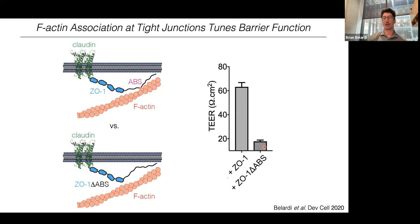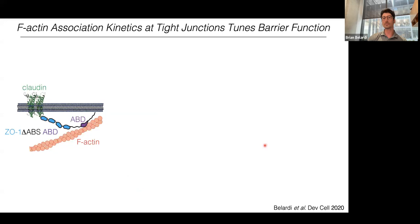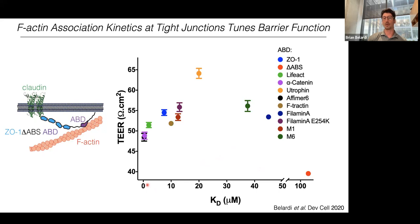To test this, we engineered a version of cells that had ZO1 but lacked that 28 amino acid sequence, and we compared their barrier function using transepithelial electrical resistance. We saw a drastic difference: ZO1 containing the actin-binding sequence had high barrier function (low permeability), while cells with ZO1 lacking those 20 amino acids showed a drastic reduction in TEER. We then replaced the actin-binding site with different actin-binding domains from a variety of proteins that had a range of dissociation constants, or Kds.